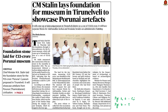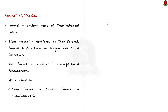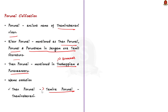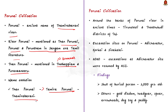The Chief Minister of Tamil Nadu laid the foundation stone for a Rs. 33 crore Porunai Museum proposed in Tirunelveli to showcase artifacts from the Porunai civilization. Porunai is the ancient name of the river Tamirabarani, mentioned in Sangam era Tamil literature by names like Tanporunai, Porunal and Porundam. The Tanporunai finds a place in Tolkappiyam, an ancient Tamil grammar treatise. Researchers say Tanporunai evolved into Tamirapurunai and then Tamirabarani. The civilization that flourished on the banks of this river is termed the Porunai civilization, covering present-day Tirunelveli and Thoothukudi districts.